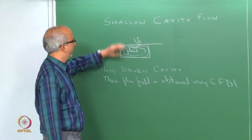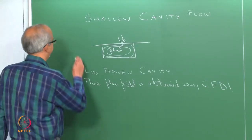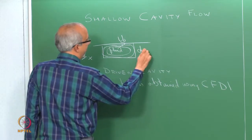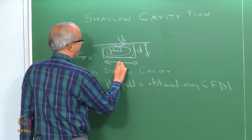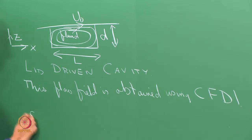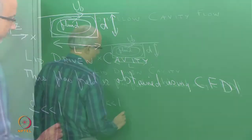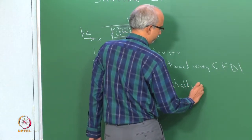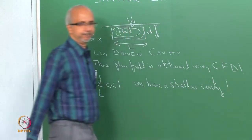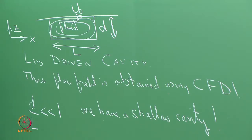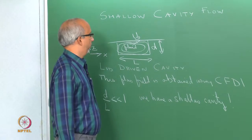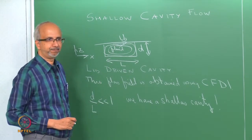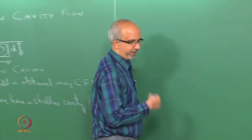When we talk about a shallow cavity, we are talking about a cavity whose depth in the z direction is d and whose extent in the x direction is L. If d/L is very much smaller than 1, we have a shallow cavity. What we would like to do is analyze this problem and see if we can get some idea about the flow field inside by exploiting the fact that d/L is very much less than 1.